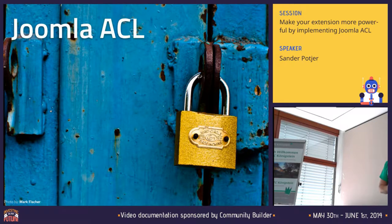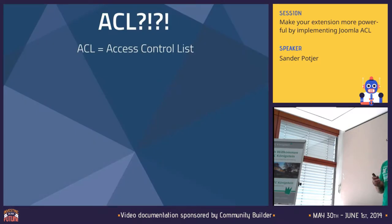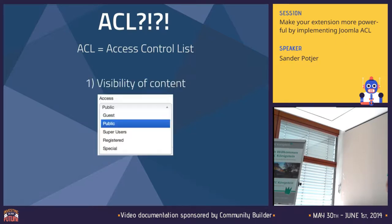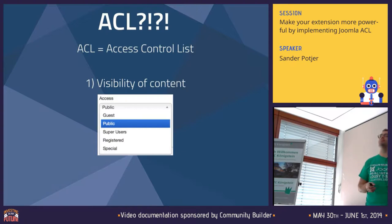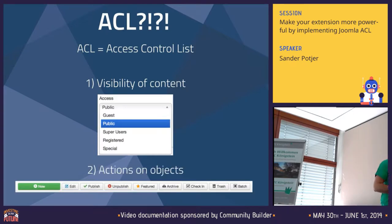Joomla ACL. Where does ACL stand for? It stands for Access Control List. In Joomla, we basically have two parts of the Joomla ACL. We have the visibility of content, which is applied for articles, categories, menu items, modules — basically what is visible on the website. And the other part is the actions on objects, which can be anything like categories, articles, components — meaning what a user can do by creating new content, editing or deleting anything.